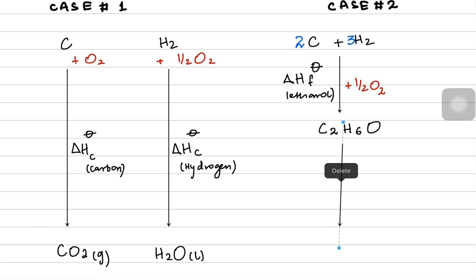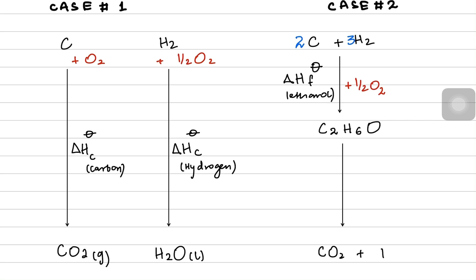Continuing in case two, I then combust the ethanol to produce carbon dioxide and water. So in the second scenario I made ethanol first and then combusted it to make two moles of carbon dioxide and three moles of water. This enthalpy value is called the standard enthalpy of combustion for pure ethanol.